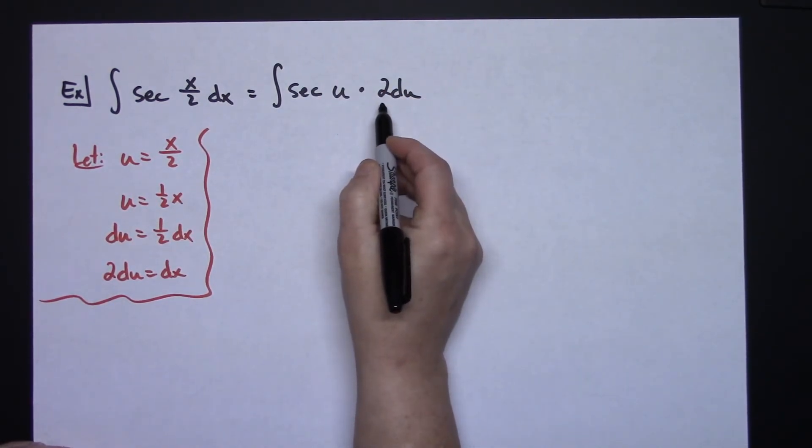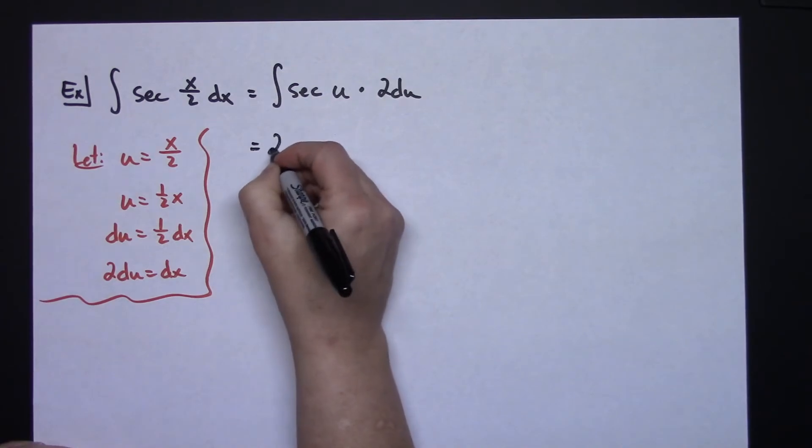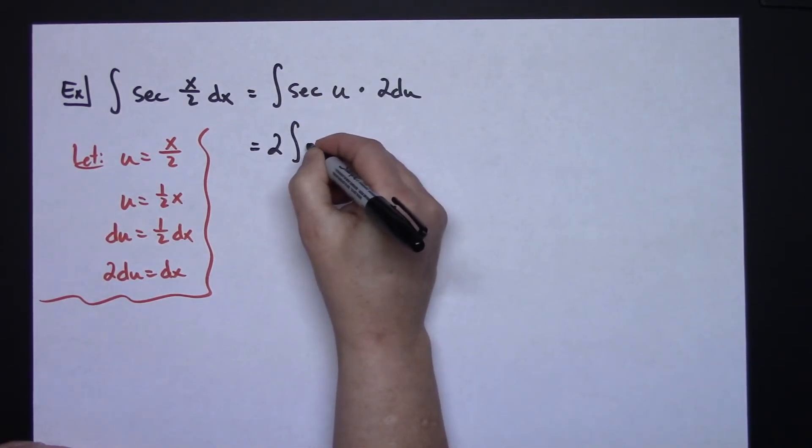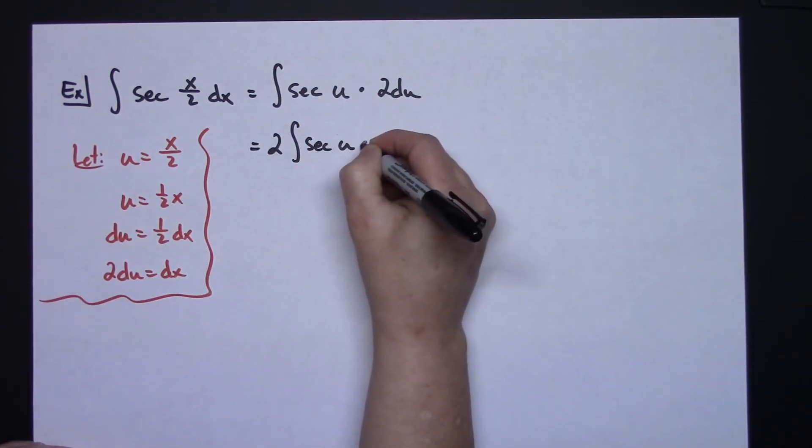I've got a constant right there that I can pull out in front, so 2 integral secant u du.